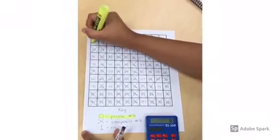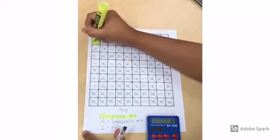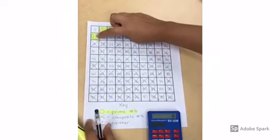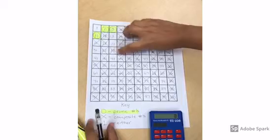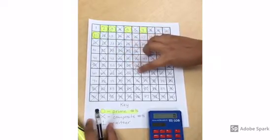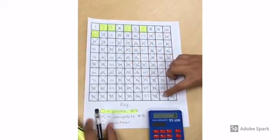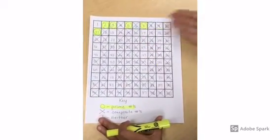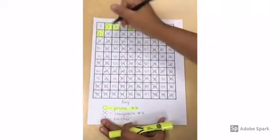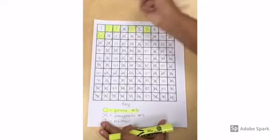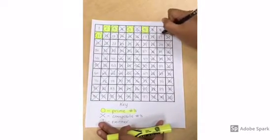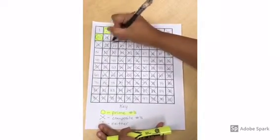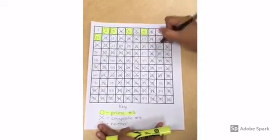Eleven is your next prime number. You can highlight now or at the very end. Eleven is your check — check diagonally to see if all the multiples of eleven have been crossed out. After you check your elevens, it is now time to circle all your prime numbers. The next prime number you circle is thirteen, then seventeen, then nineteen. Remember, you need to go in order from left to right.